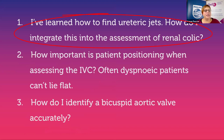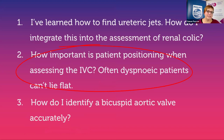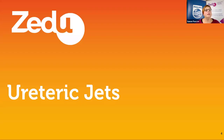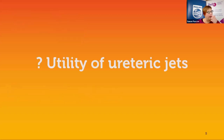The questions for tonight's session: the first question is I've learned how to find ureteric jets — how do I integrate this into the assessment of renal colic? Then we're going to look at how important is patient positioning when assessing the IVC, as dyspneic patients often can't lie flat. And last but not least, how to identify a bicuspid aortic valve accurately.